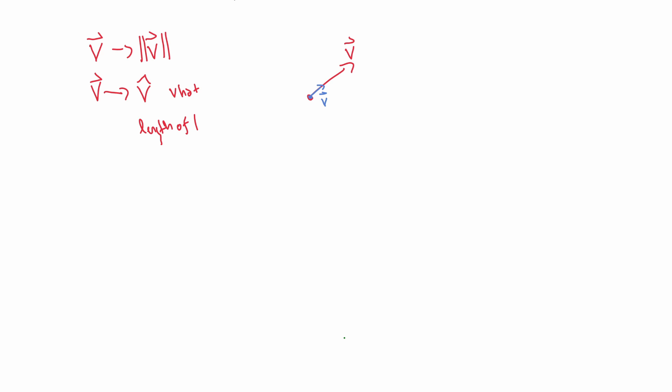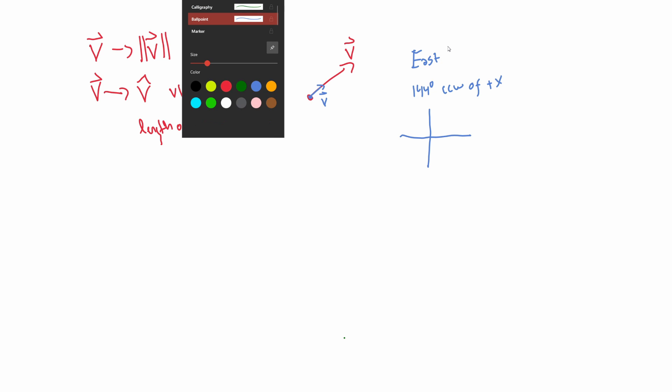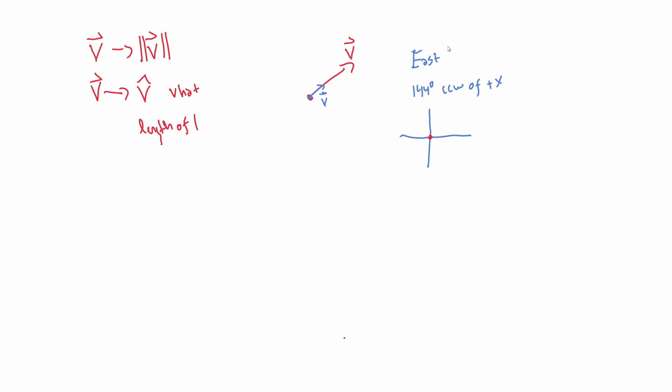A couple of examples of unit vectors are something like just plain east or north or west or south. Or you could be more specific and say 144 degrees counterclockwise of plus x, which is kind of what we would say something like that would look like with the x, y plane here. It would look like here's 0, 90, 180, so 144 is something like this. And then there is my unit vector with a length of 1.